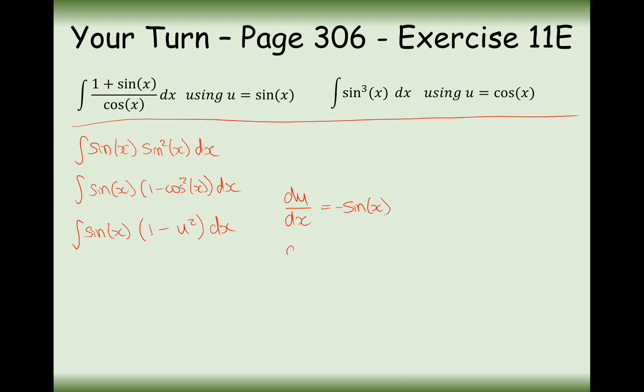In that case, dx is going to equal minus 1 over sine x du. Let's put that in. It's going to be, sines will cancel out, one here, one here. So it's going to be minus bracket 1 minus u squared du.